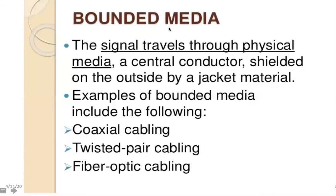The first topic in Unit 3 is bounded media. A signal travels through a physical media — a central conductor shielded on the outside by a jacket material. This kind of physical media is called bounded media. 'Bounded' means you have a limit, you have a boundary, and you allow the electromagnetic wave to travel through something with that boundary.